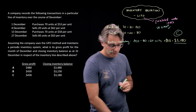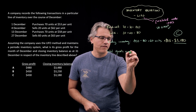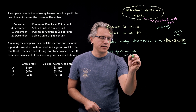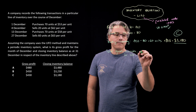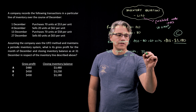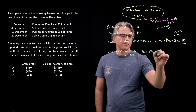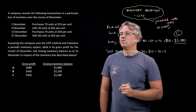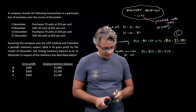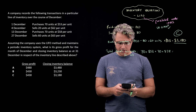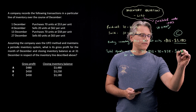Total goods available for sale during the period: 70 units initially purchased at $53 each, plus another 70 units purchased later at $58 per unit. We did this computation in the previous video, but let's do it again. 70 times 53 plus 70 times 58 equals $7,770.